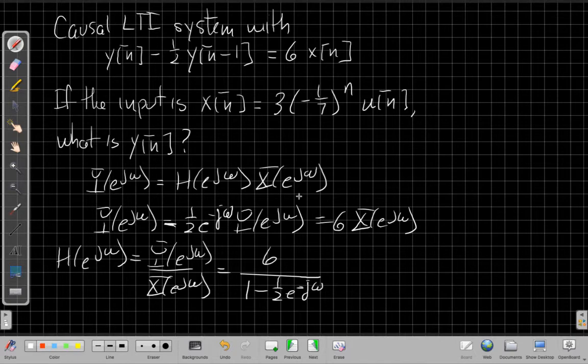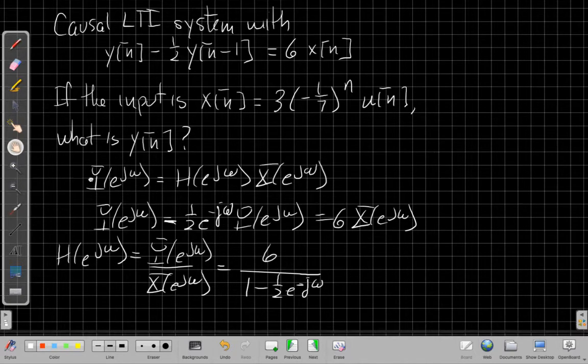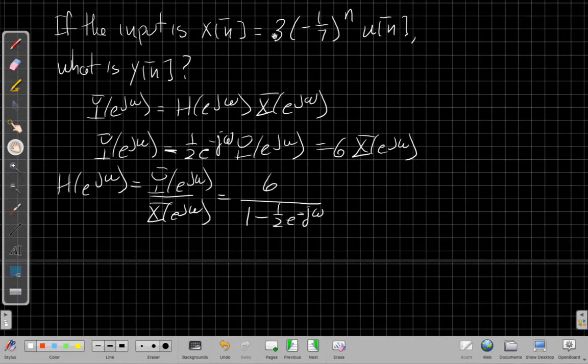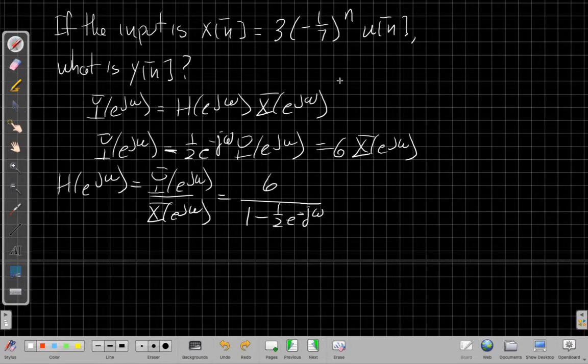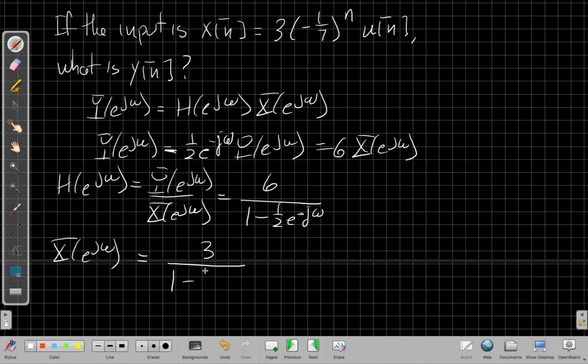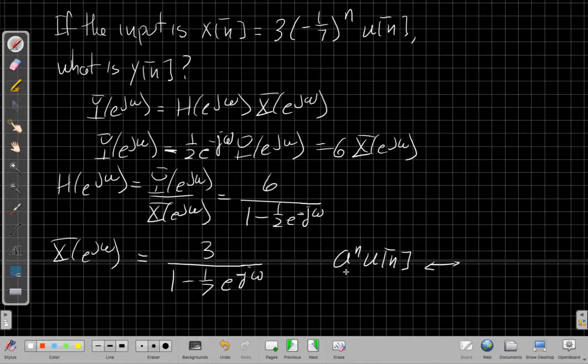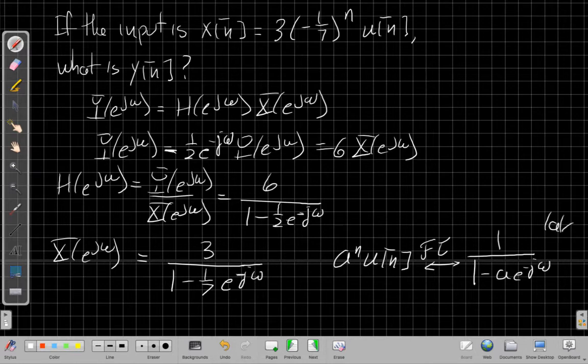The other piece I need is the Fourier transform X(e^jω). This isn't too bad because it's almost like things we know from the table. This would be a^n u[n], which I have in the table. With the 3, it's just the linearity property. So X(e^jω) = 3 / (1 - (1/7)e^(-jω)). I'm using the Fourier transform pair from the tables: if I have a^n u[n], the Fourier transform is 1 / (1 - ae^(-jω)).